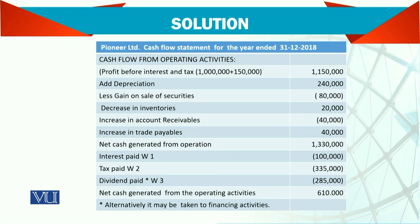The company name — we are just working on cash flow from operating activity. We got profit before interest and tax, and then we add depreciation. The figures are all given. Then less: gain on sale of security.